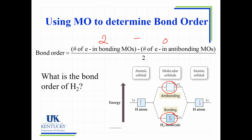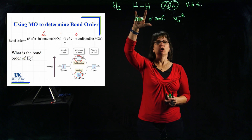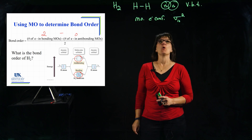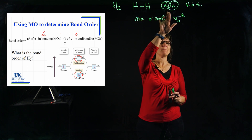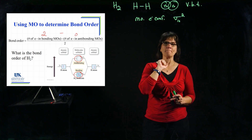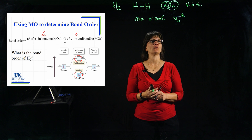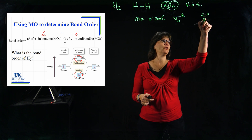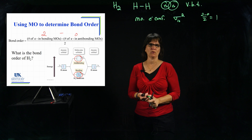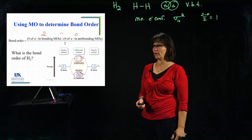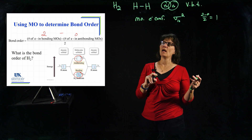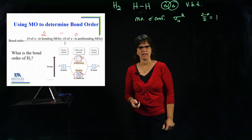So how does this match up with valence bond theory? When we drew the Lewis structure, it showed a single bond, and valence bond theory described it as the overlap of 1s orbitals. Molecular orbital theory gives us (2 - 0) / 2 = a bond order of 1, also a single bond. So both valence bond theory, driven from the Lewis structure, and molecular orbital theory give you the same bonding for H2 — it's a single bond.